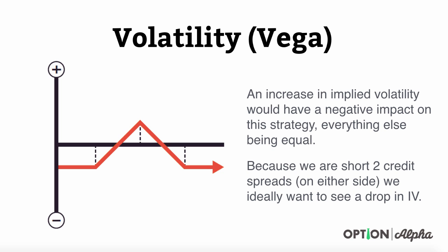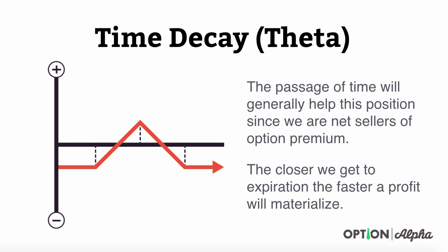An increase in implied volatility does have a negative impact on this position, so we want to enter these trades when implied volatility is very high. Because we're short two credit spreads on either side of the market, we definitely want to see a drop in implied volatility, so let's put ourselves in a good position by first entering these trades when IV is really high. Time decay is also going to help these positions since we're net premium sellers on both sides — the closer we get to expiration, the faster a profit will start to materialize.